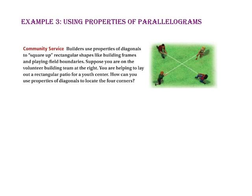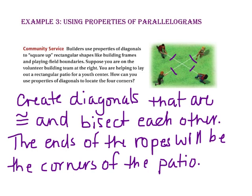In Example 3, we will use the property of parallelograms. Builders use properties of diagonals to square up rectangular shapes like building frames and playing field boundaries. Suppose you are helping to lay out a rectangular patio for a youth center. How can you use the properties of diagonals to locate the four corners? The diagonals of a rectangle are congruent and bisect each other, so as long as all four segments are congruent, the playing field will be a rectangle and the ends of the ropes will be the corners of the patio.